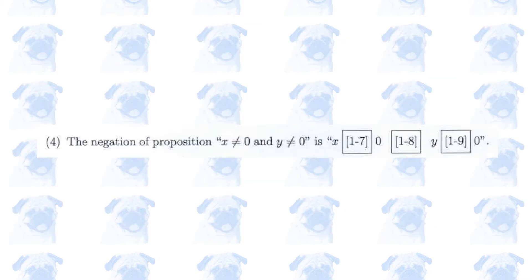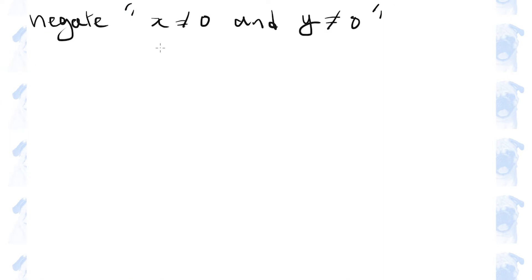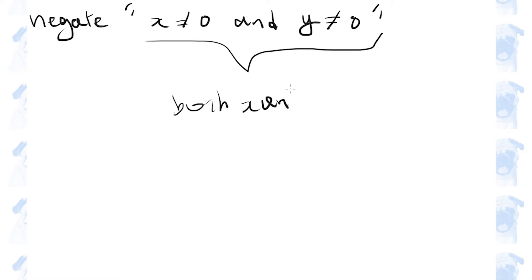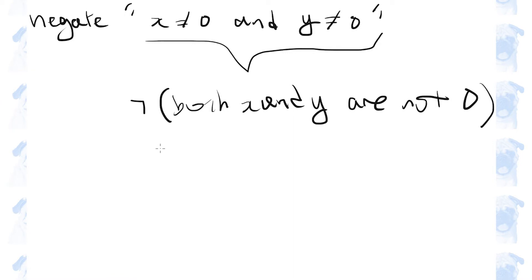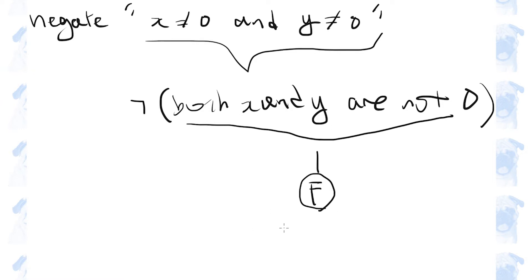Number 4. We have a proposition that says x is not 0 and y is not 0. Both x and y are not 0. In order to find the negation of this proposition, we have to think about what makes this proposition false. This proposition is false when either x is 0 or y is 0.